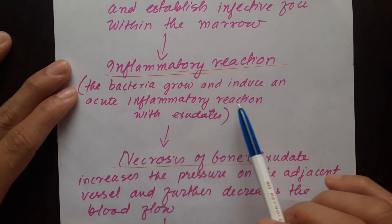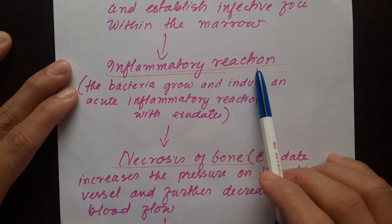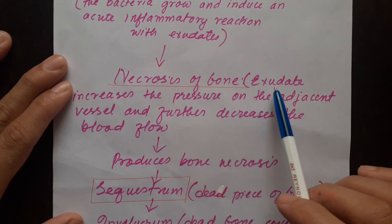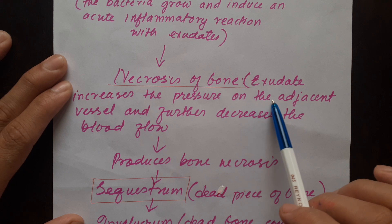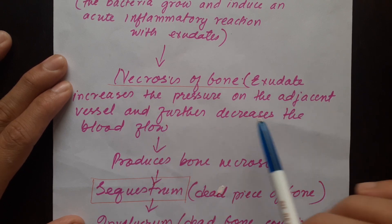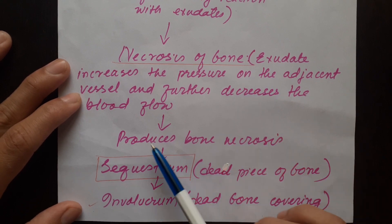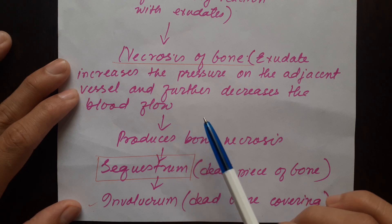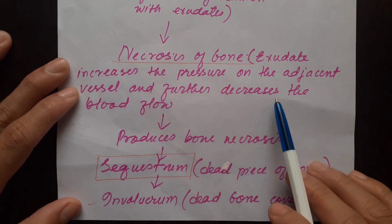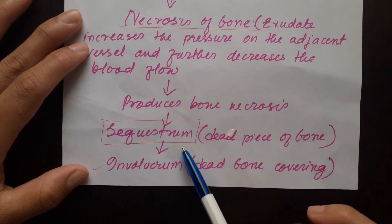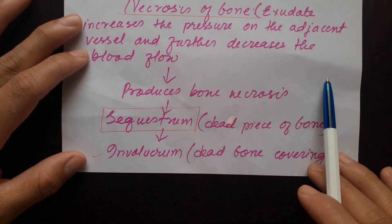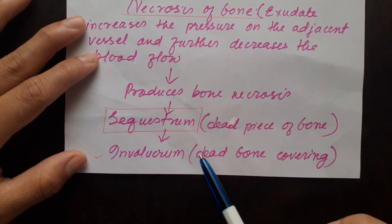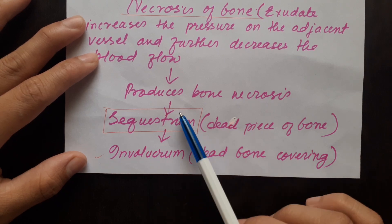After that it leads to an inflammatory reaction. The bacteria grow and induce an acute inflammatory reaction with exudates. They also produce exudates which increase pressure on adjacent blood vessels, further decreasing blood flow. This causes bone necrosis due to decreased blood flow, leading to sequestrum — a dead piece of bone — followed by formation of a new bone covering called involucrum, which covers the sequestrum.